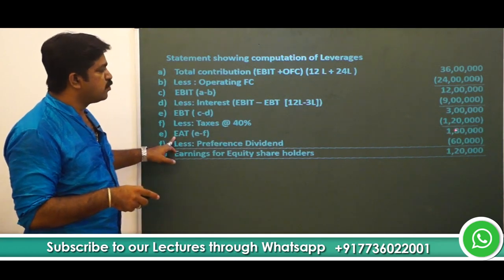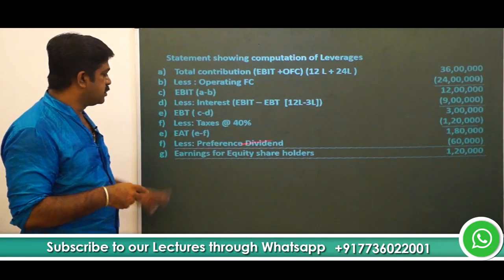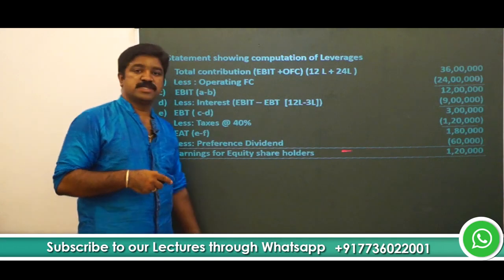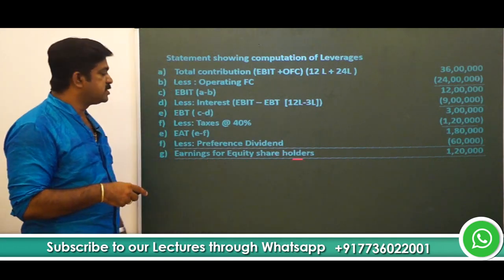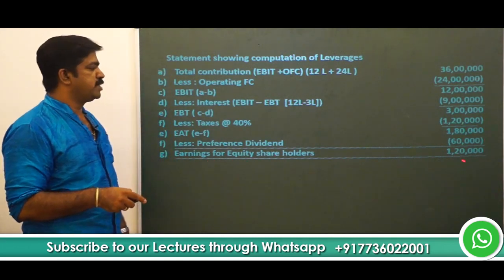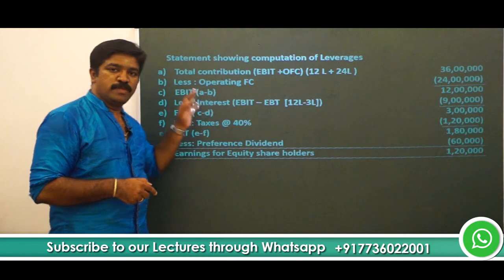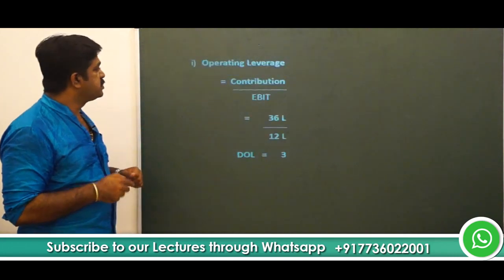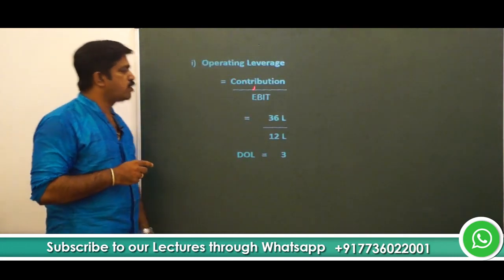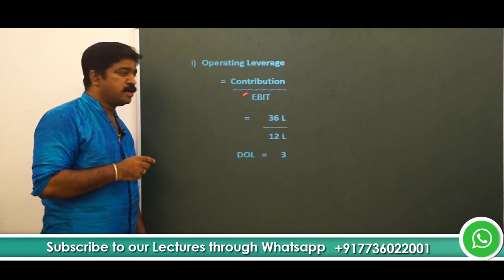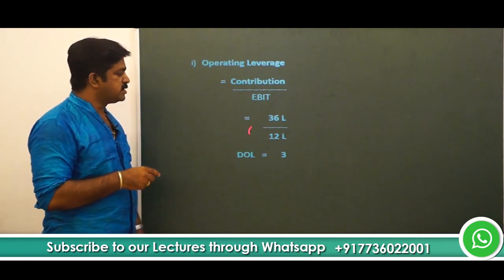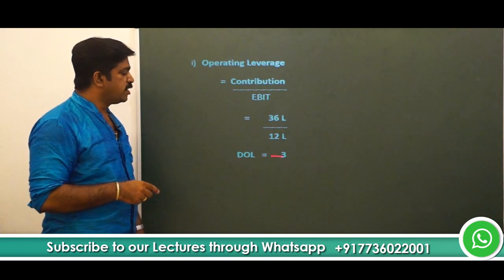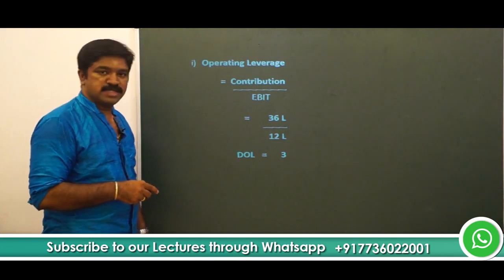Earnings after taxes are 1 lakh 80,000. Less preference dividend given in the question directly — 60,000. So earnings available for equity shareholders are 1 lakh 20,000. Now we compute each leverage. First, operating leverage: formula is contribution by EBIT. Contribution we calculated as 36 lakhs, EBIT given is 12 lakhs, so the degree of operating leverage is 3.